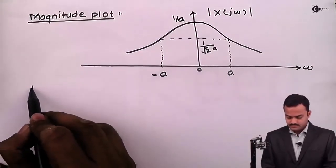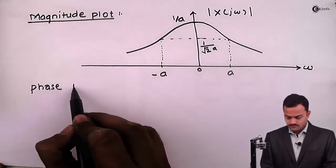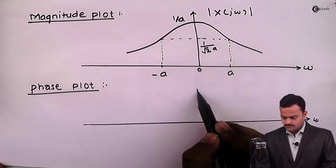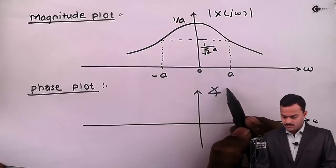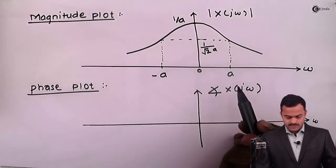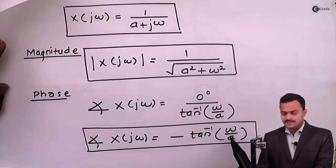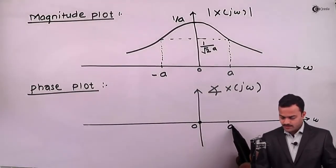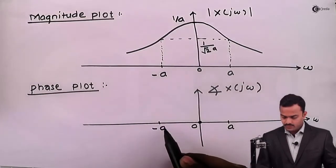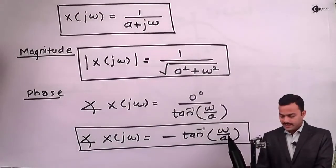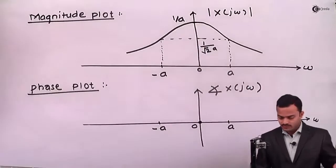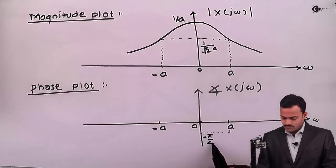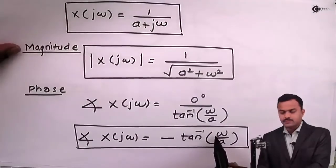Let's go for the phase plot. This is the angle of X(jω). We will check with respect to some constant values. If I have omega as 0, it is tan inverse of 0, which is 0. Then suppose I am having omega as a and minus a. Whenever omega equals a, I will get minus tan inverse of 1, which is minus pi by 4. So somewhere here I will have minus pi by 4. And for omega equal to minus a, we will get plus pi by 4.